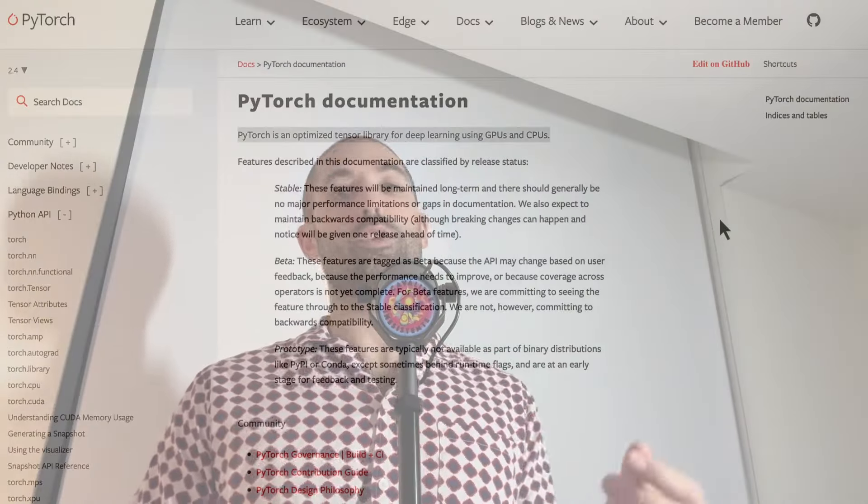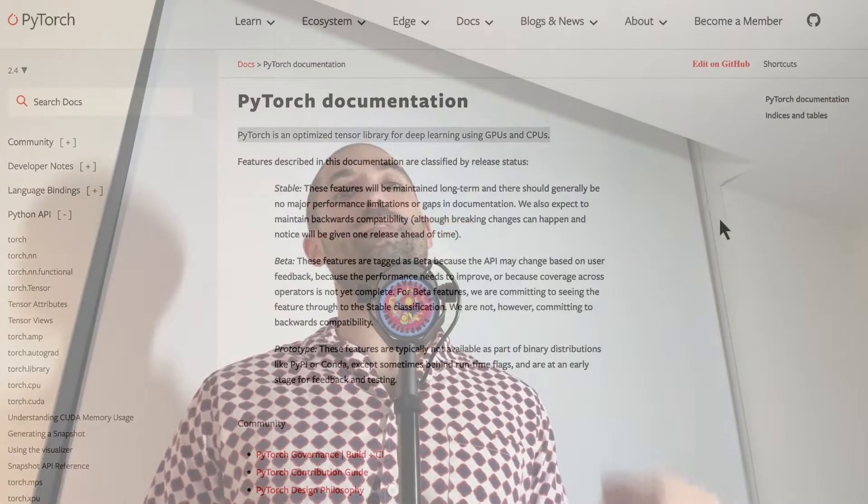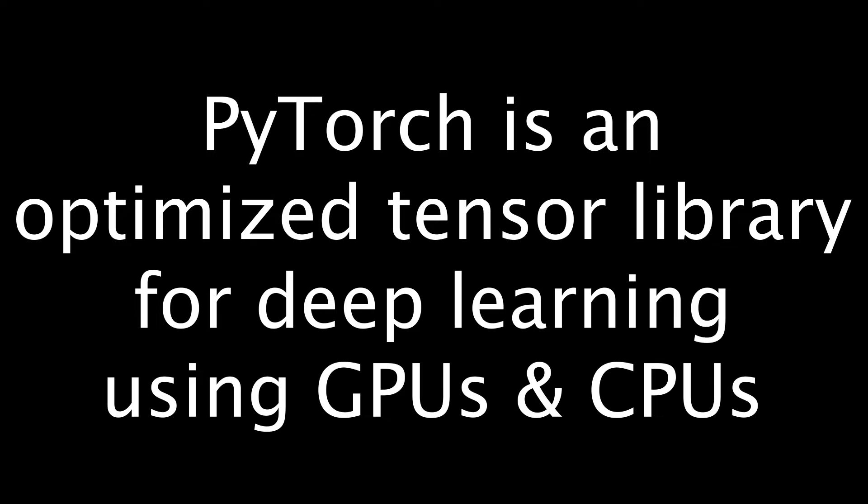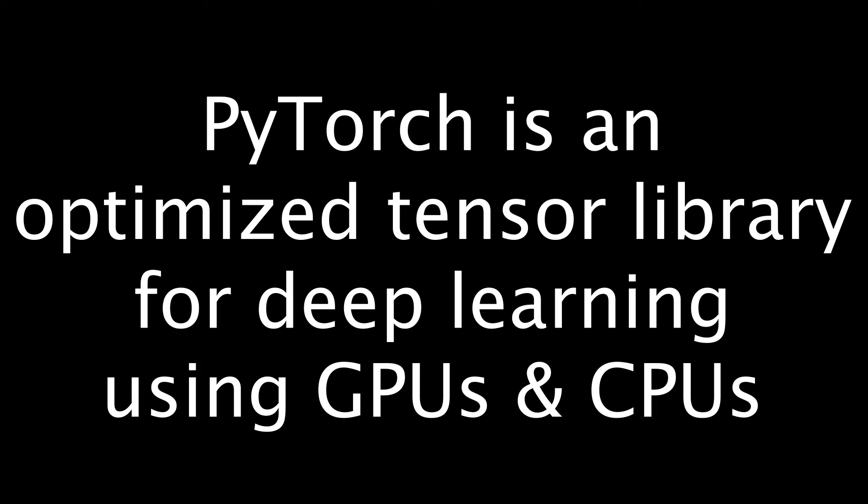Okay, on the PyTorch.org docs, you'll see what I find to be the most concise definition of what PyTorch is. And now you have the background knowledge to appreciate what it means. PyTorch is an optimized tensor library for deep learning using GPUs and CPUs.